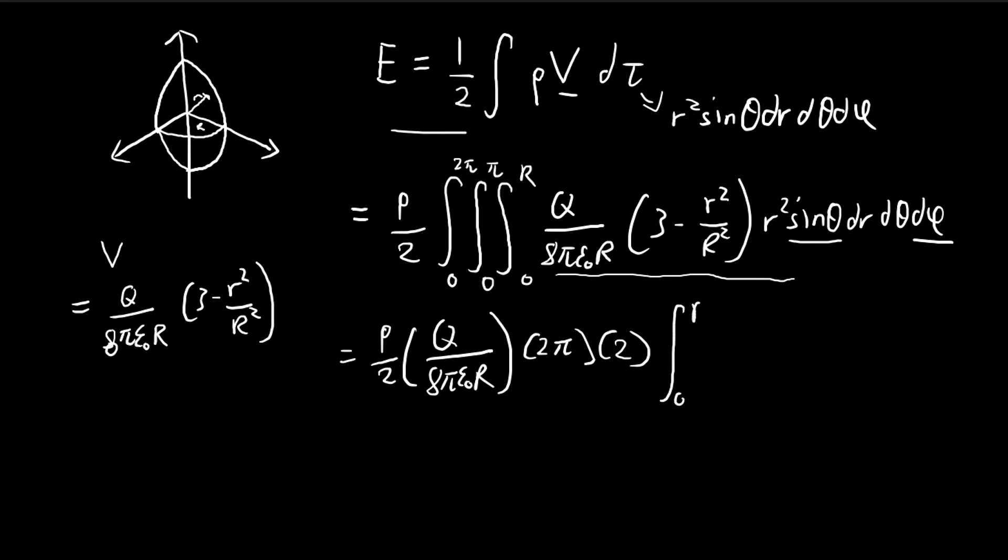All we're left with is this term. I'm going to move this r² inside the bracket: (3r² - r⁴/R²) dr. The twos cancel out, the πs cancel out, and there's a 4 here.